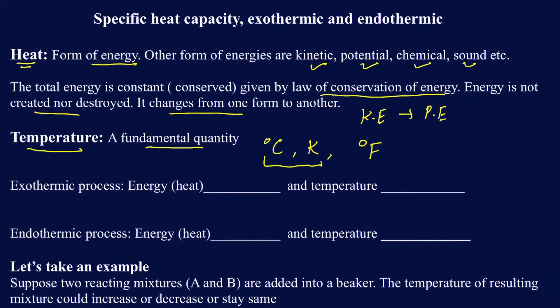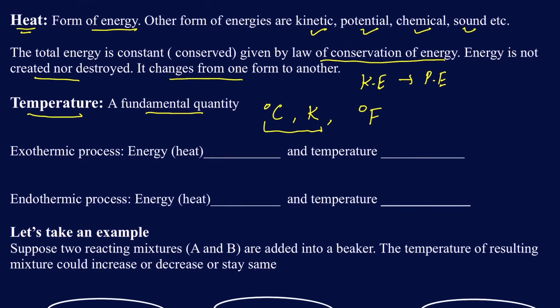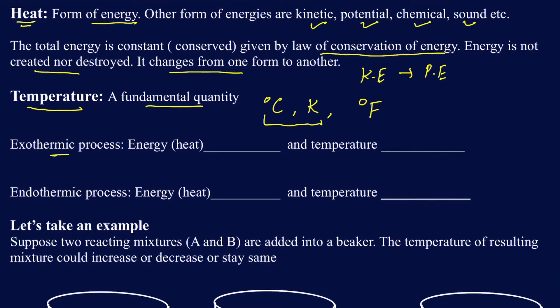Let's talk about how energy and temperature are related to one another. There are actually going to be two processes. One of them is called an exothermic process. In an exothermic process, the energy or heat is released. Whenever you perform a process where energy is released, it's an exothermic process. The exothermic process usually raises the temperature of the surroundings — the temperature would increase any time an exothermic process takes place.